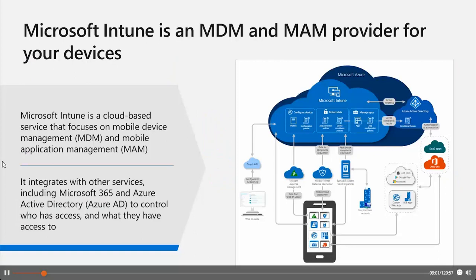Microsoft Intune provides basically two main feature sets: mobile device management (MDM) and mobile application management (MAM). As you see in the figure, Microsoft Intune is a pure cloud service itself, well integrated into Azure Active Directory. You can call the Graph API to gather information, use a telecom expense management connector, integrate into mobile threat defense connectors, and also network access control partner topics. There is complete integration into the conditional access topic and specifically the device compliance results, which we can use in conditional access policies — we'll take a look at that later in this module.